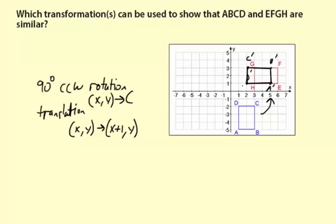And if you're not sure as far as the rotation goes, just take a point or two that you rotated and see what happens. So let's look at point D for example. D was (1,-2) and then D prime became (2,1).